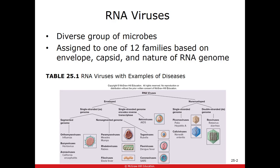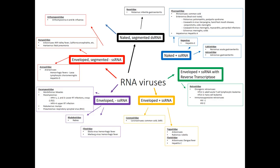This diagram shows how we group all of the different RNA viruses. We group them based on whether they have an envelope or are naked, whether they have the positive strand or the negative strand, and whether their genetic material is segmented or in one big circular chunk. We're going to start with the red on the top left and work our way around.